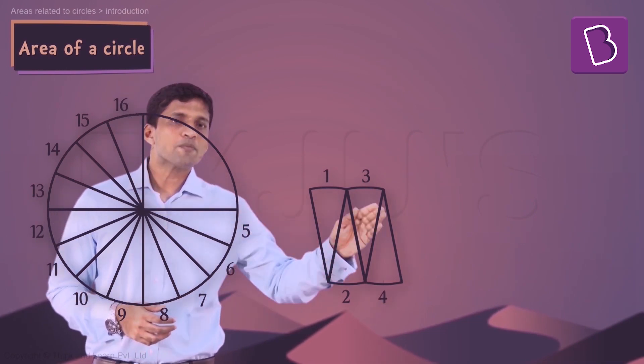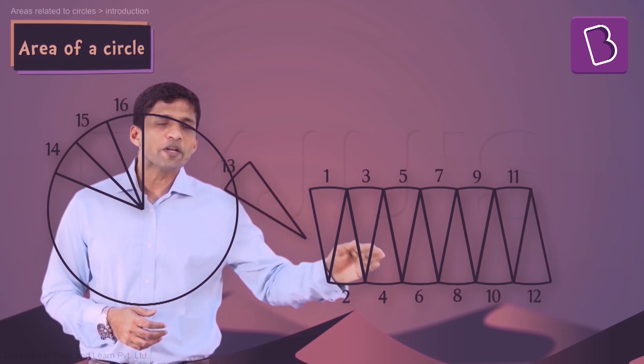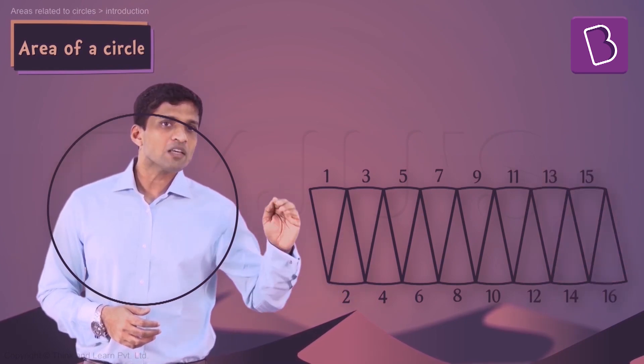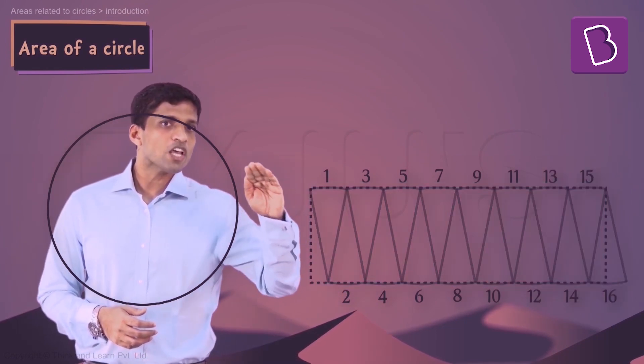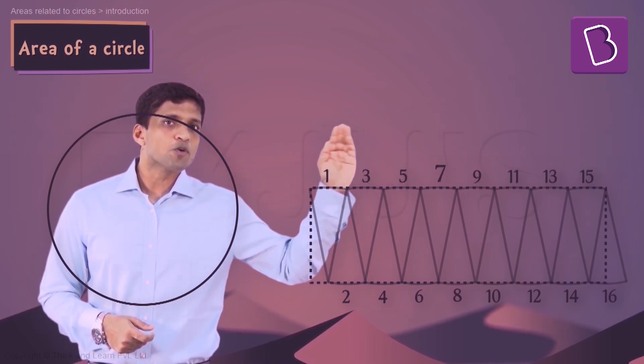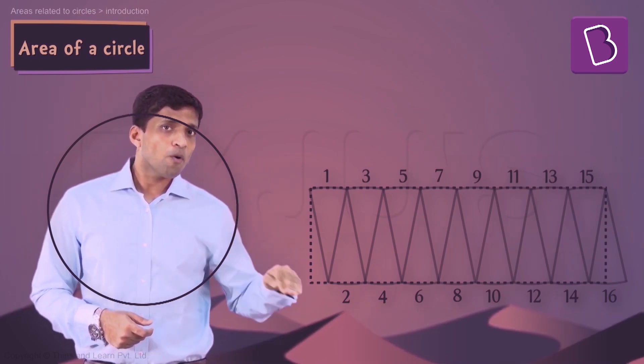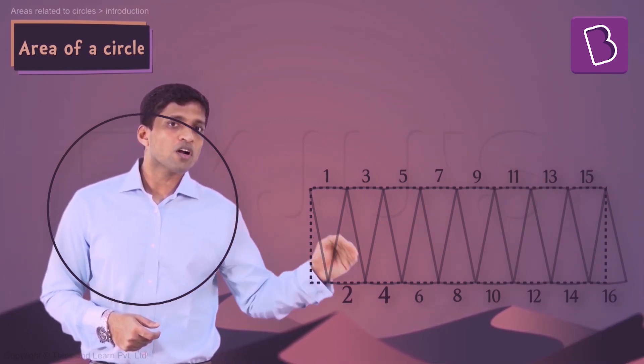And if you bring all of them one by one like this and keep it here, what we will get here is nothing but a rectangle where you can see on top you can see numbers 1, 3, 5, 7 up to 15, which is basically half of the sectors. Bottom also you will see half which is 2, 4 up to 16.